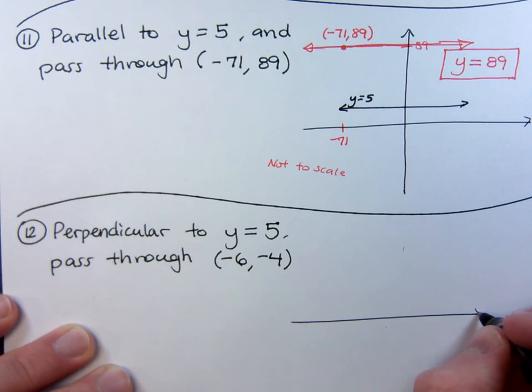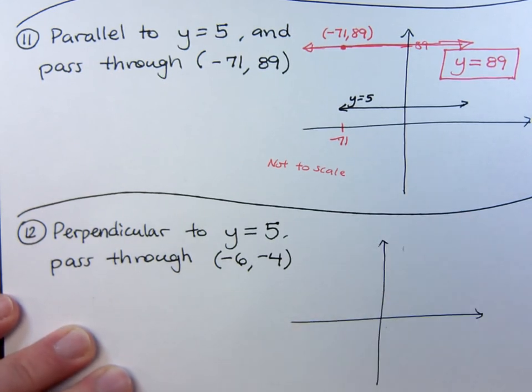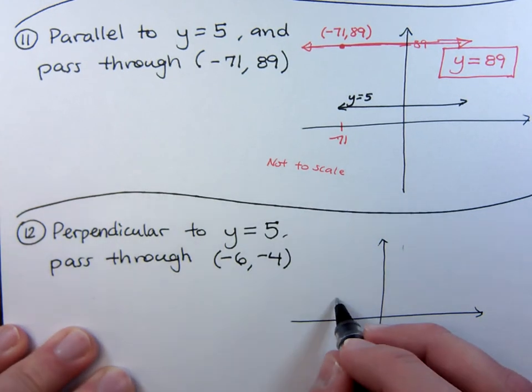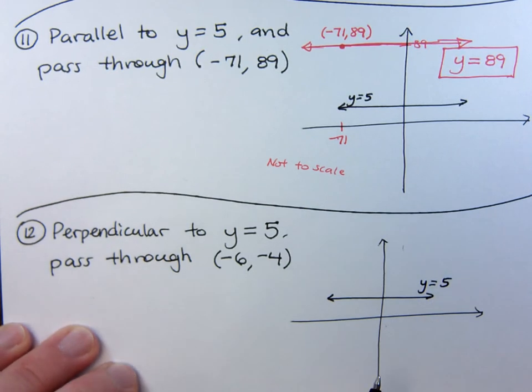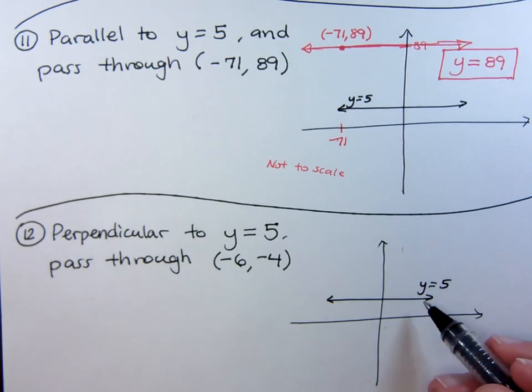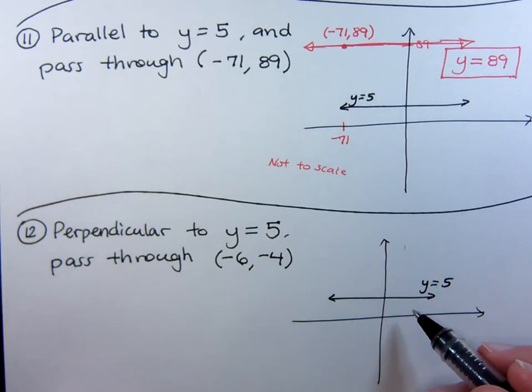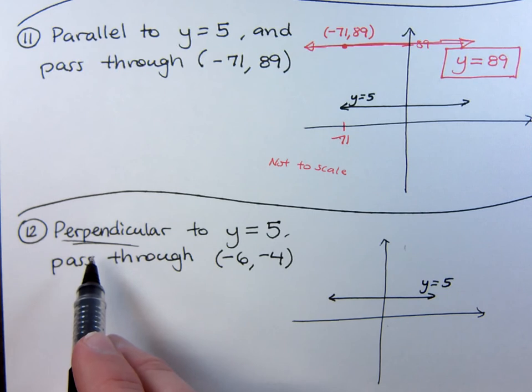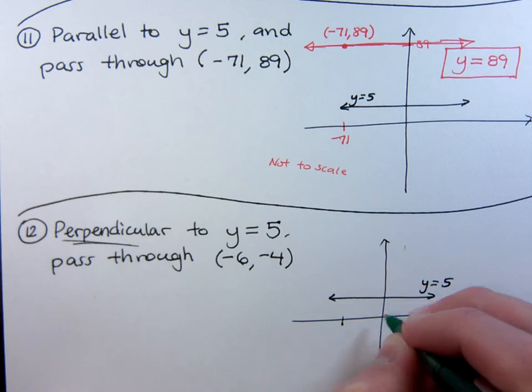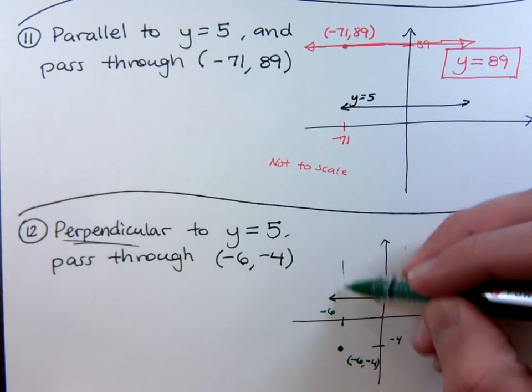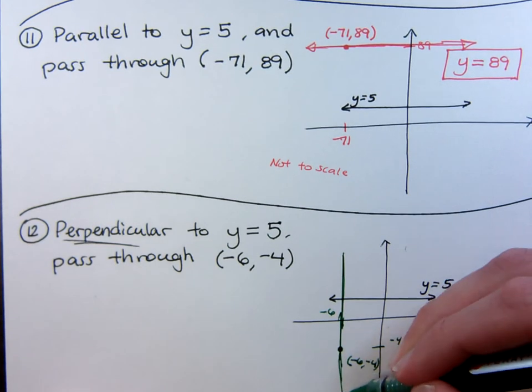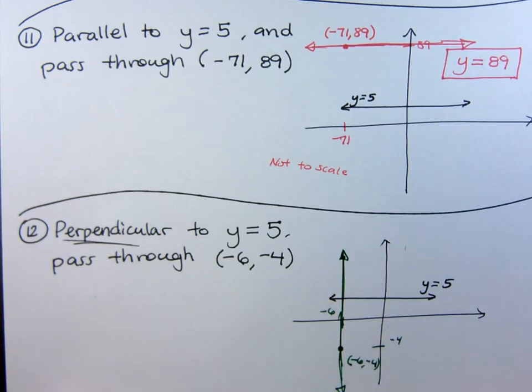Well, again, I could draw a little sketch over here to see what's going on. Here is y equals 5. Now, what does it mean to be perpendicular to a horizontal line? Parallel was another horizontal line, but to be perpendicular means you're going to be a vertical line. So, I need to be a vertical line that goes through the point negative 6, negative 4. So, this is what my line looks like. But, what is the equation for this line?